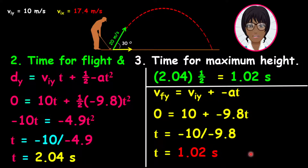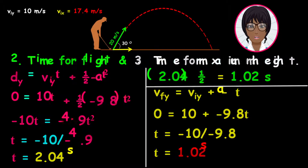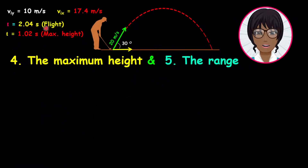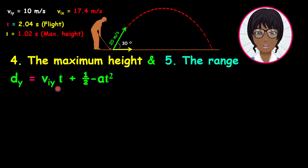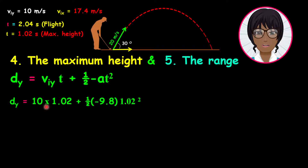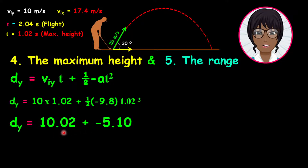Now let us jump into the next question. Please note that the calculated variables are on top of the page for convenience. To find the maximum height we will use the formula: dy equals the initial velocity multiplied by time plus half negative acceleration multiplied by time squared. Therefore, dy equals 10 multiplied by 1.02 plus half negative 9.8 multiplied by 1.02 squared. This gives dy equals 10.02 plus negative 5.10, thus dy equals 5.10 meters.